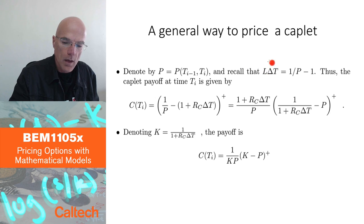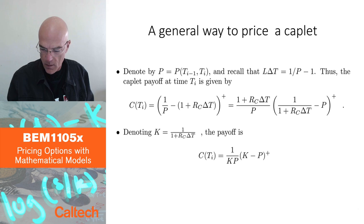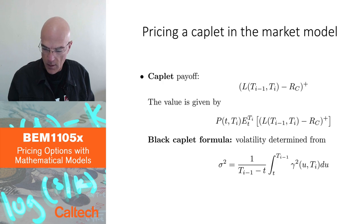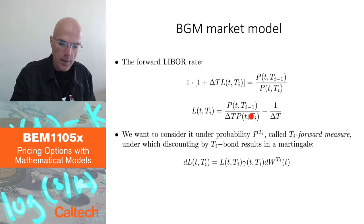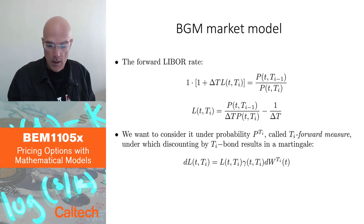Alright, so I can then rewrite the formula for the LIBOR rate as L delta T. If I'm not writing T's, it's L delta T is equal to 1 over P minus 1, and that's just coming back from this formula for the LIBOR rate. I can move delta T to the other side, and I can write the LIBOR rate formula like that.